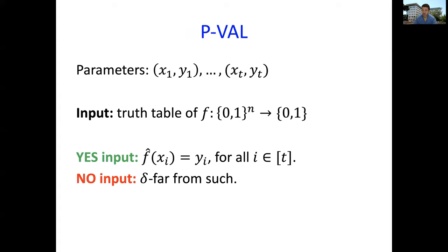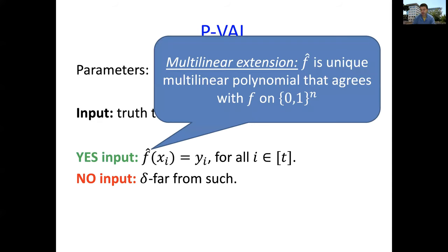What is PVAL? PVAL stands for polynomial evaluation. This problem is parametrized by a bunch of points, x1 y1 up to xt yt. The input is big. We're in this context of interactive proofs of proximity, so we have this big input. We think of this input as being a truth table of a function f. Remember we can only read relatively few points from the truth table. What is the input in the language? We're going to look at this f hat. f hat denotes the multilinear extension of f. The multilinear extension is the unique multilinear polynomial that agrees with f on 0,1 to the n, where we're working over some sufficiently large finite field.